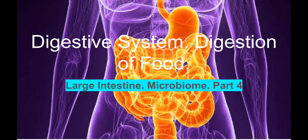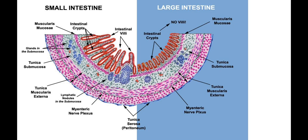This video is a continuation — Part 4 — and here we will talk about the large intestine and microbiome. We can see from this slide that the structure of the small intestine and large intestine is quite different. In the small intestine we have very high surface volume with intestinal villi, but there are no villi in the large intestine. Instead we have intestinal crypts, which are thicker and have much less surface area.